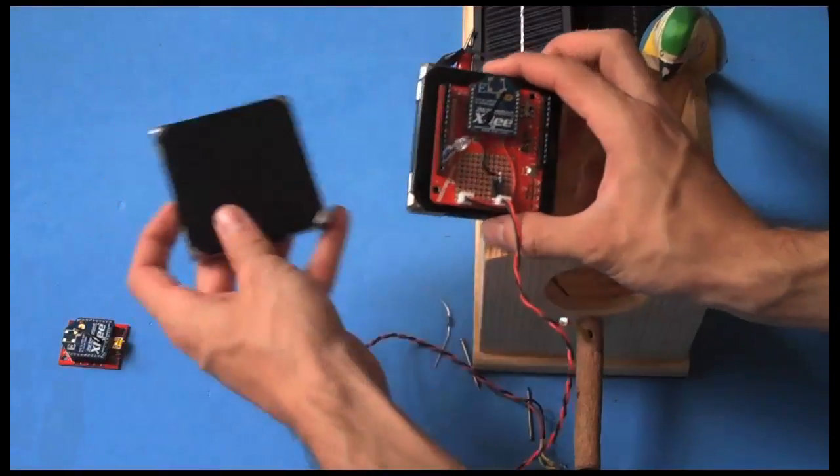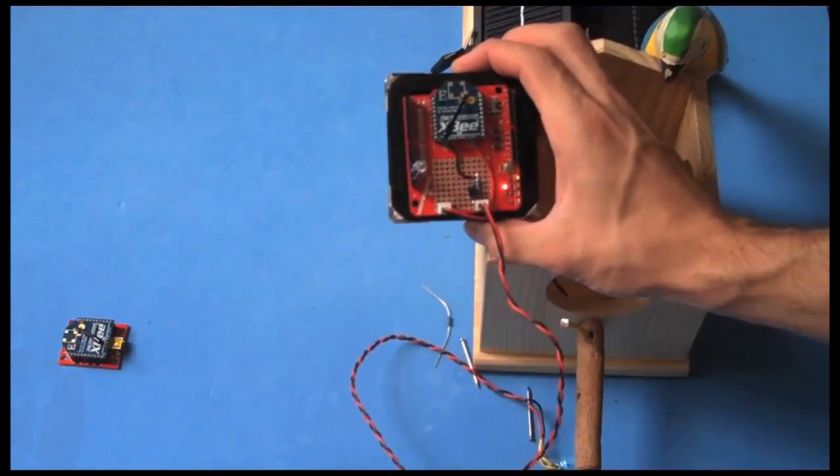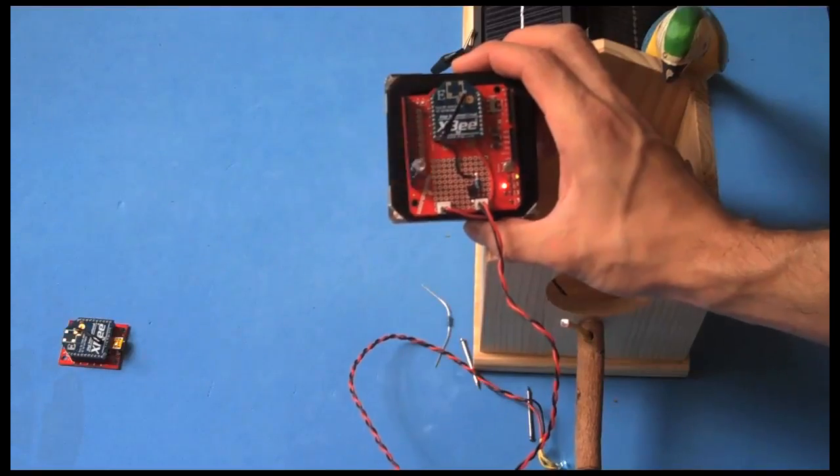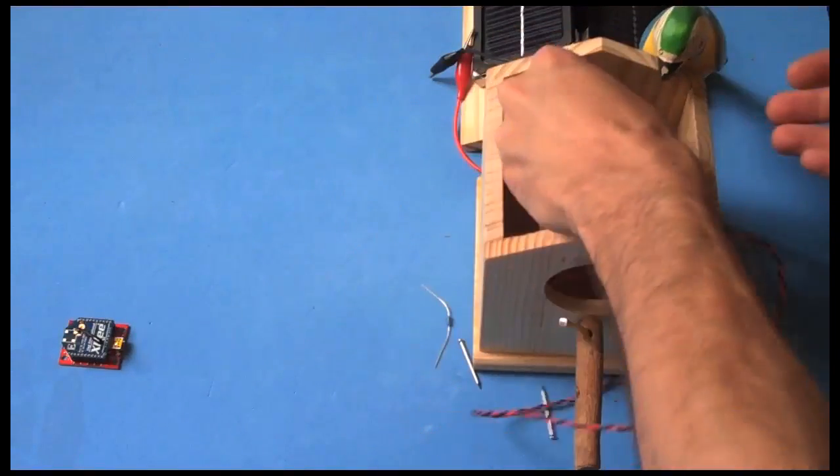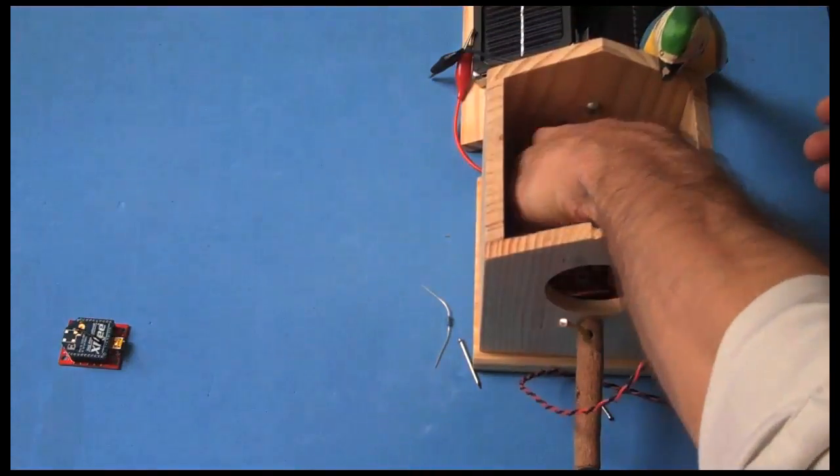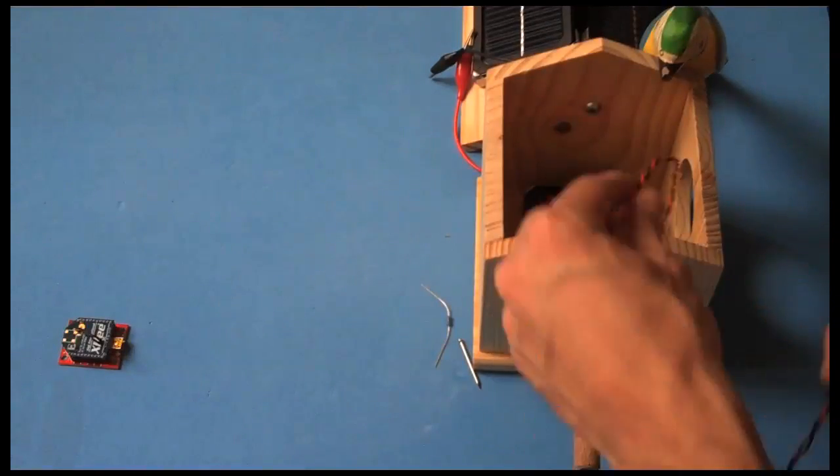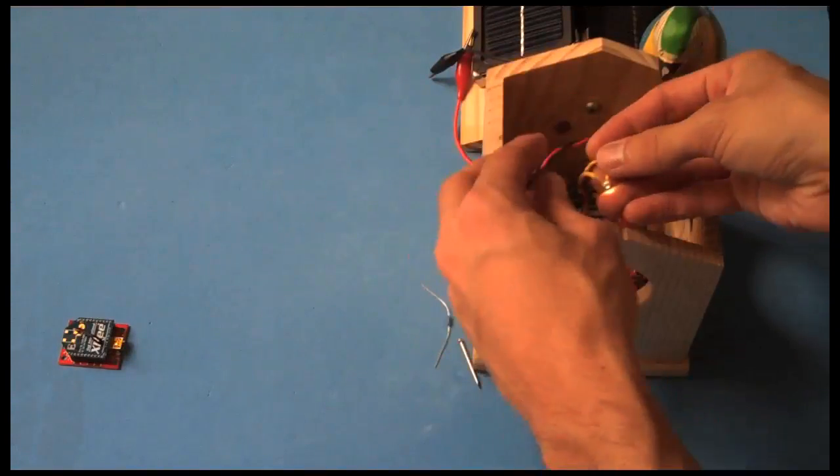You can take your battery square and put it underneath and you're all powered up. Put that inside your birdhouse. You may want to get a plastic bag.